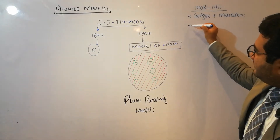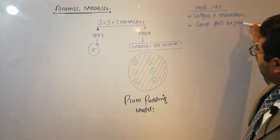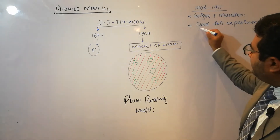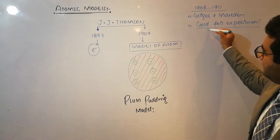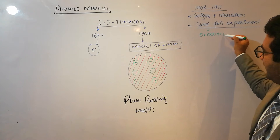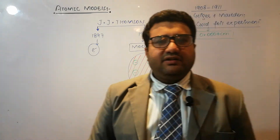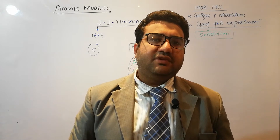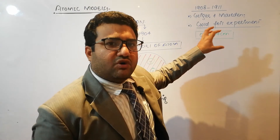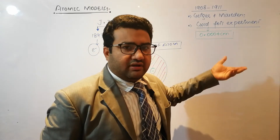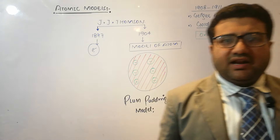They performed an experiment now called the gold foil experiment. They used a gold foil of thickness 0.0004 cm. Gold was selected because it is the most malleable metal in the periodic table, and its thickness can be reduced to any desired minimum value.